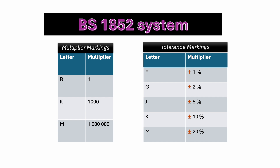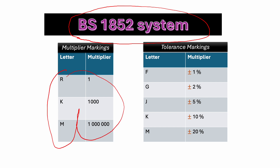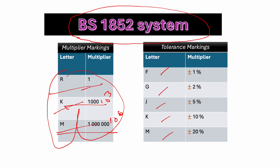Another system to find the value of a resistor is the BS 1852 system. It uses the letters R, K, and M: R means multiply by 1, K means kilo (10 to the power 3), and M means mega (10 to the power 6). The letters for tolerance are F, G, J, K, and M, representing tolerances ranging from ±1% to ±20%.